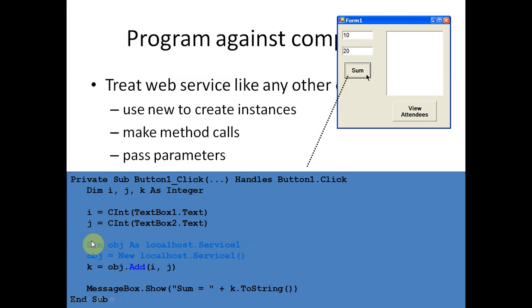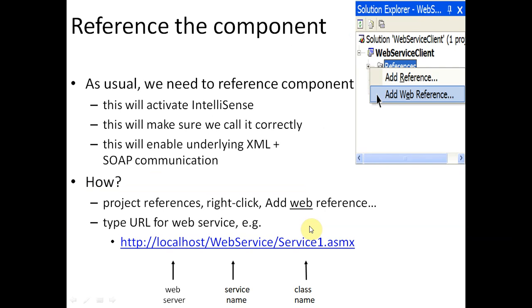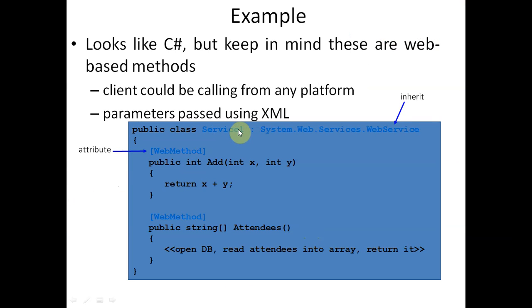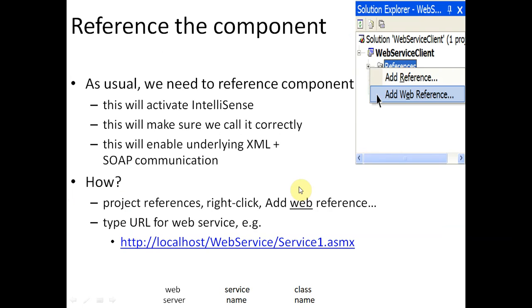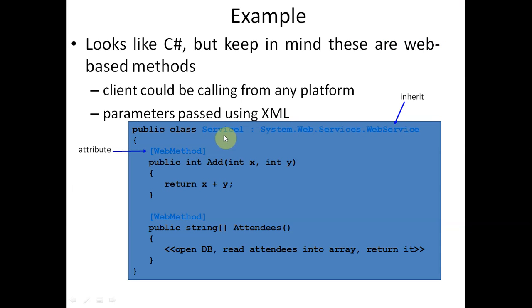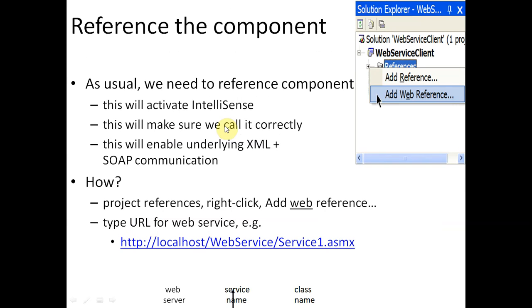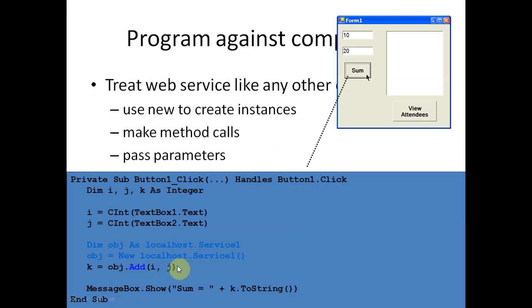We define: Dim obj As localhost.Service1. We write localhost.Service1 because Service1 is the name of the web service and it resides inside our local server. If the server were a remote server, we would write the remote server's name. Since our server is a local server, we write localhost.Service1. This is how we reference the web service object.